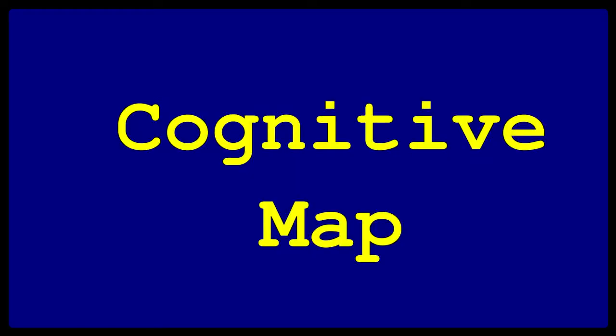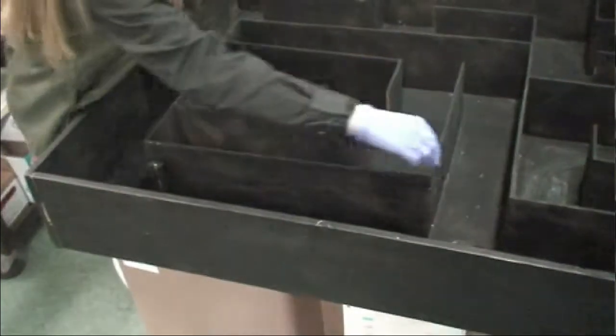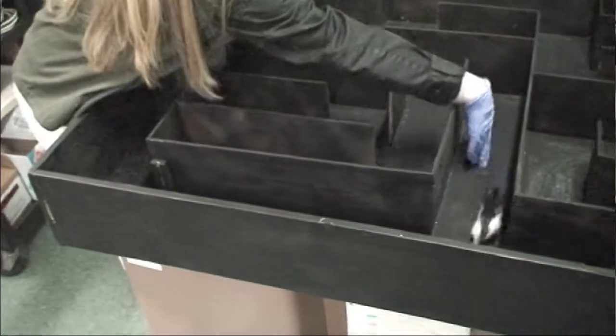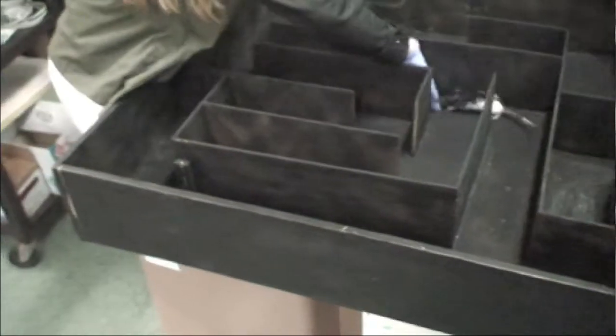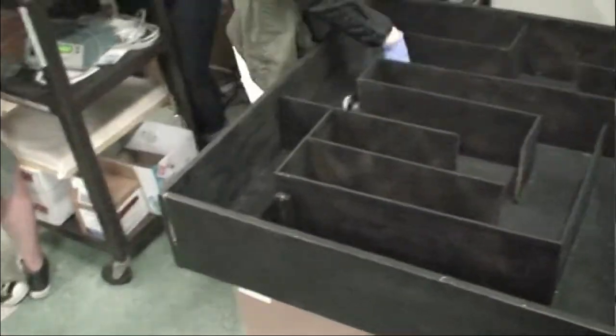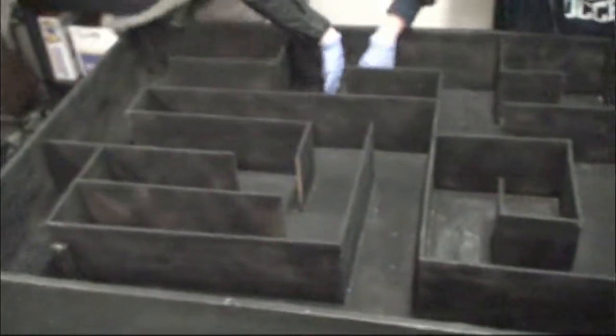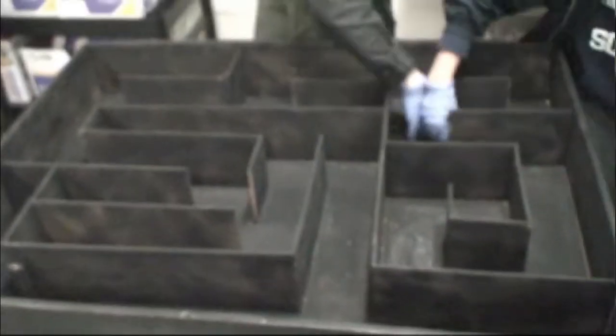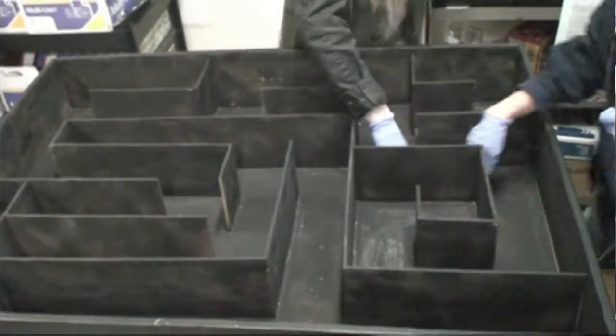A cognitive map: a mental layout of an environment. If the rat is constantly going through the maze, it will develop a mental layout of the maze in its mind. Thank you.